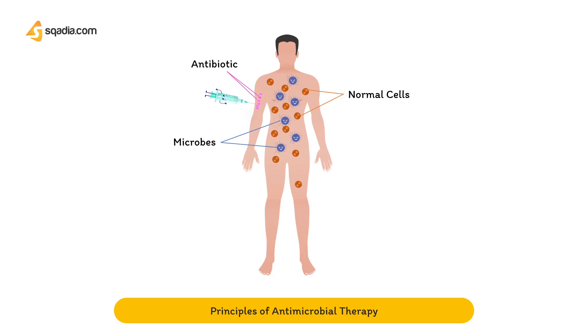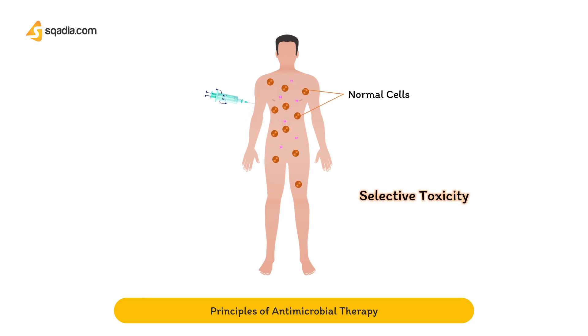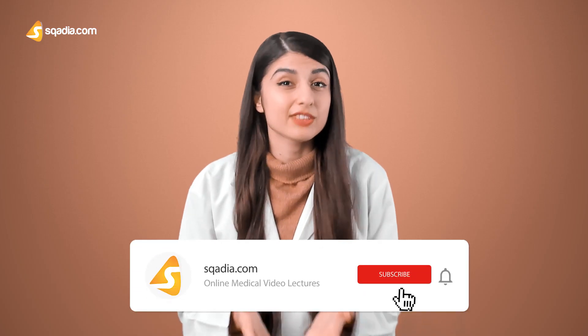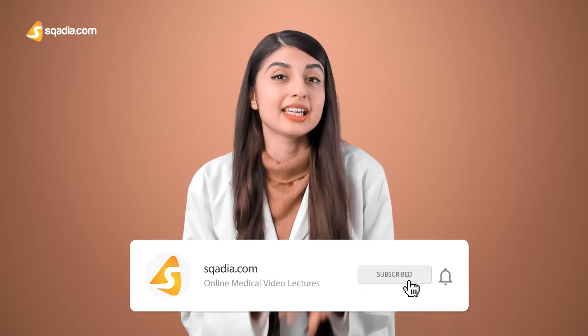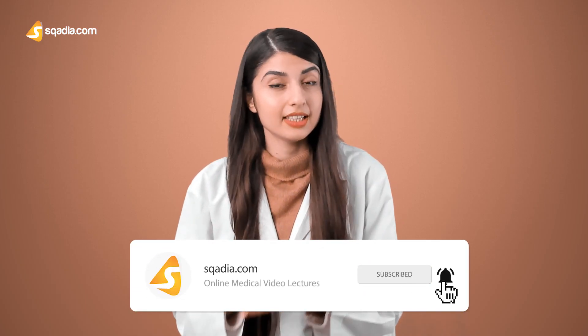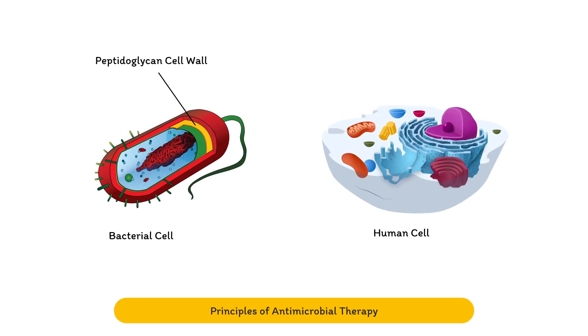Antibiotics aim to kill organisms while causing no harm to the patient. This concept is known as selective toxicity. It is best achieved by inhibiting bacterial functions that are not present in human cells. For example, the peptidoglycan of bacterial cells is inhibited by penicillin, which is an antibiotic.